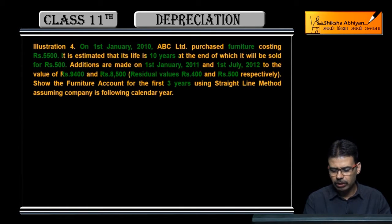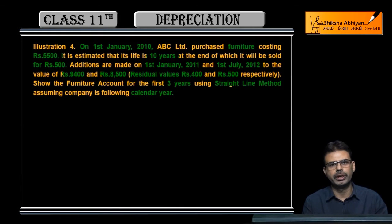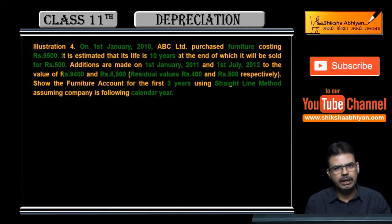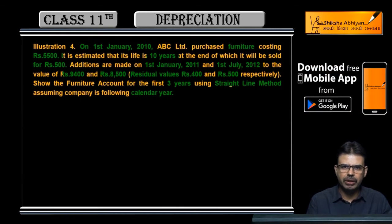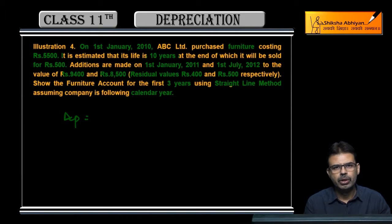You have to show the Furniture Account for the first 3 years using Straight Line Method, assuming the company is following calendar year. Since the rate of depreciation is not given, apply the formula: Depreciation equals cost plus installation charges minus scrap value divided by number of years.